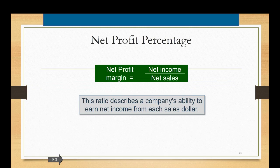Similar to this but based on net profit is the net profit percentage and this is calculated by taking net income divided by net sales. This ratio describes a company's ability to earn net income as opposed to gross profit from each sales dollar.